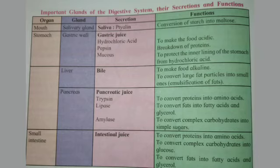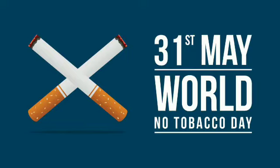Some important digestive glands and their functions are given in a table shown on the screen. You have to read it carefully and note down this table in your classwork. 31st May is observed as World No Tobacco Day because certain habits put our health at risk. Harmful habits like smoking, chewing tobacco, drinking alcohol or taking drugs affect health adversely. All organs of the digestive system are harmed by tobacco consumption. Problems like vomiting, nausea and headache occur. Tobacco particles spoil oral hygiene and tobacco leads to cancer and then death. So we should never get addicted to bad habits and always say no to tobacco.